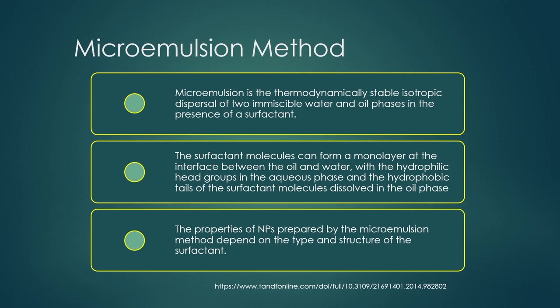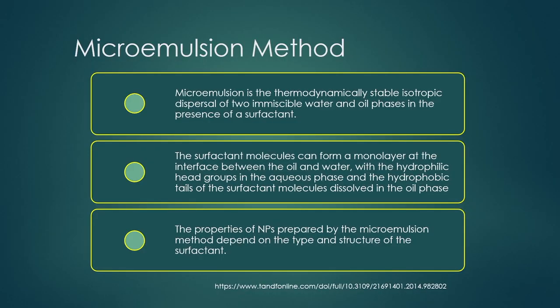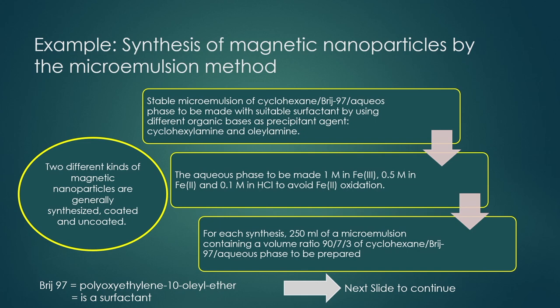The surfactant molecules form a monolayer at the oil-water interface with the hydrophilic head group in the aqueous phase and the hydrophobic tail group in the oil phase respectively. The properties of nanoparticles prepared by the microemulsion method depend on the type and structure of the surfactant — whether it is cationic or anionic — and how the monolayer forms at the oil-water interface.